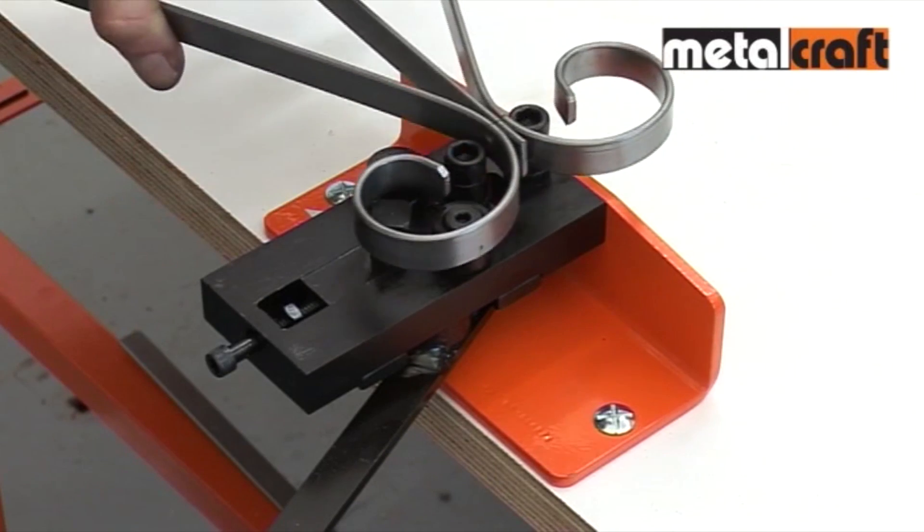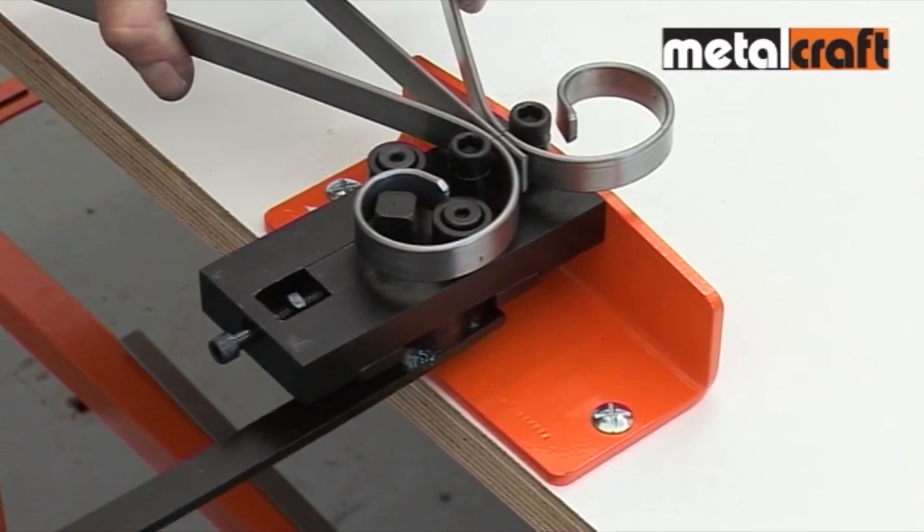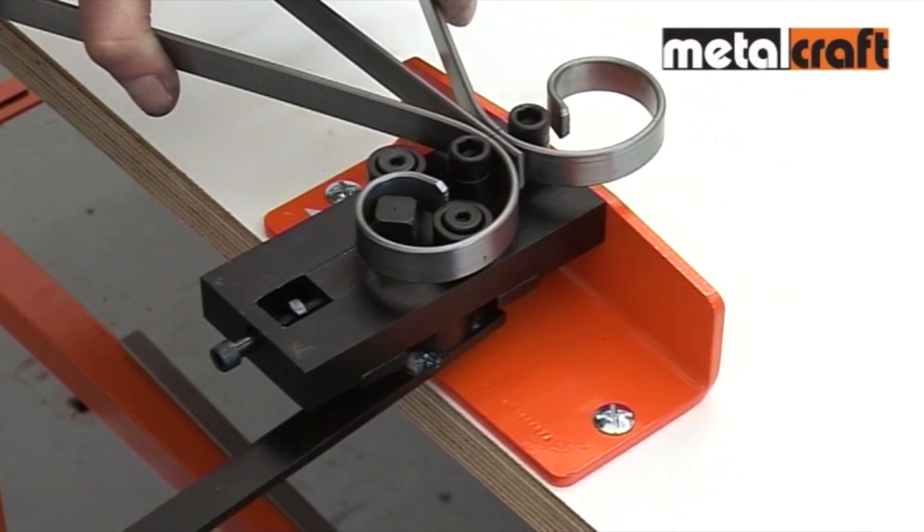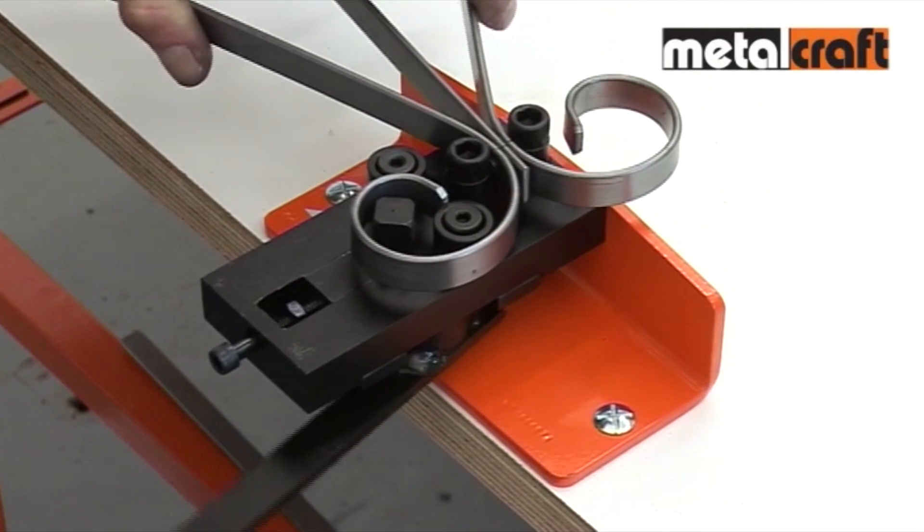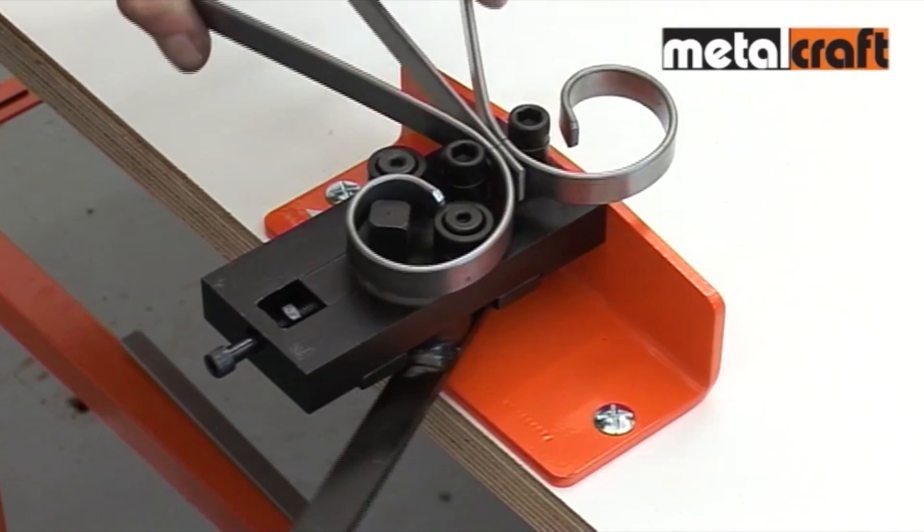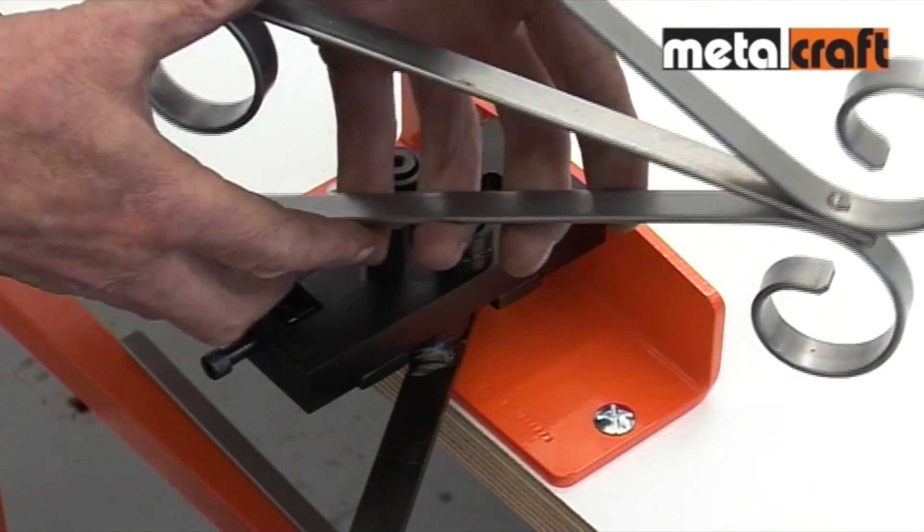Place the joint to be riveted against the tops of the two rivet posts and operate the handle to squeeze the rivet in the center and again on each side of the rivet. This swells the rivet into forming a neat, strong and unbreakable joint.